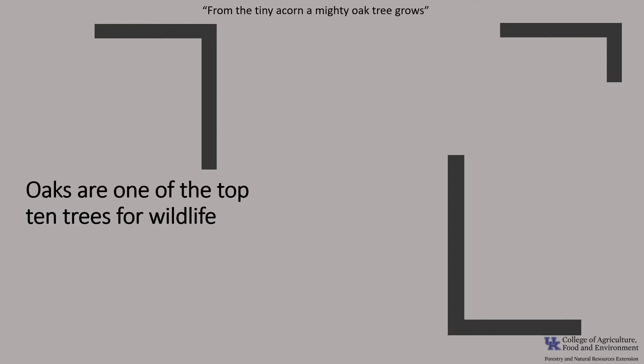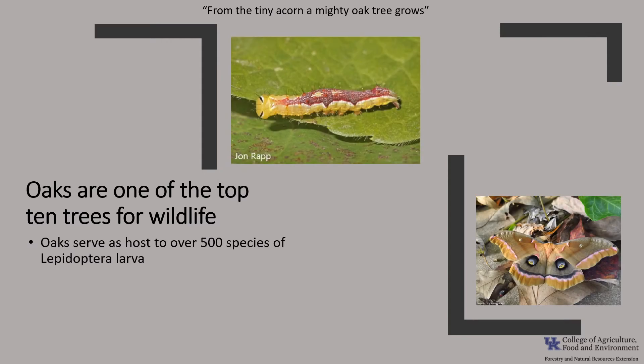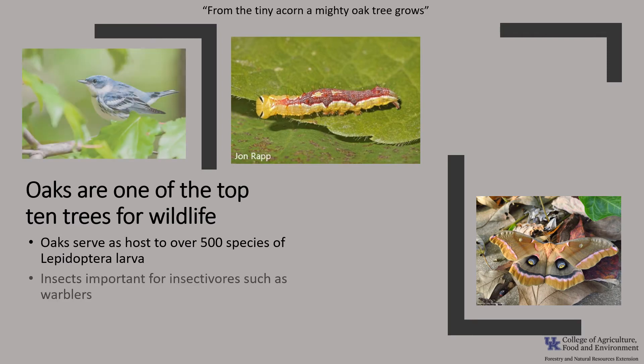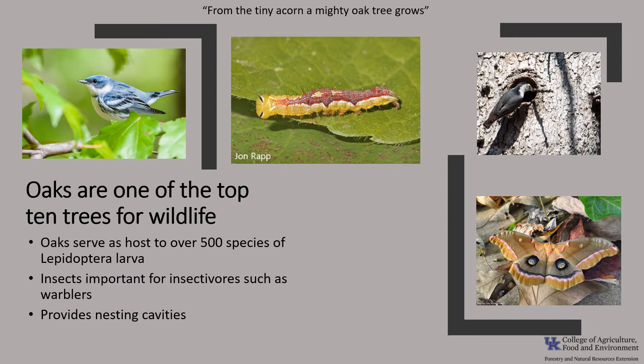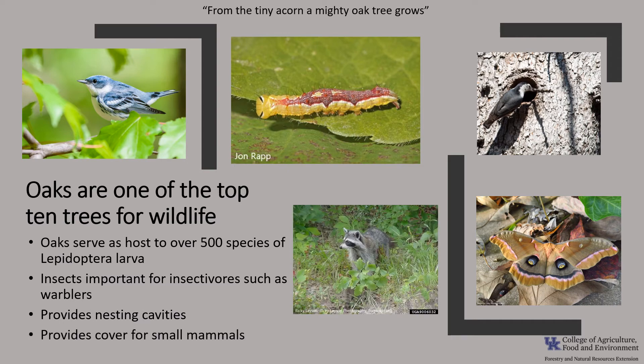From the tiny acorn a mighty oak tree grows, and according to the National Wildlife Federation, oaks are one of the top 10 trees for wildlife because they help wildlife grow. Oaks serve as a host tree for more than 500 different lepidopteran larvae, including dagger moths and the giant silk moth seen in this photo. These larvae in turn feed seasonal migratory songbirds such as our warblers. These large trees also provide critical nesting habitat for cavity nesters including the white-breasted nuthatch, and good cover for a variety of mammals, as the leaves typically persist longer than other plant associates in the forest.